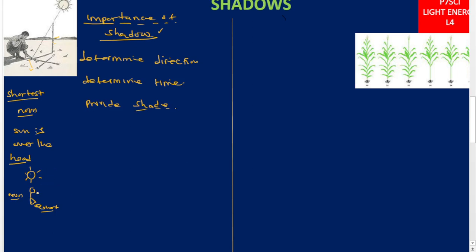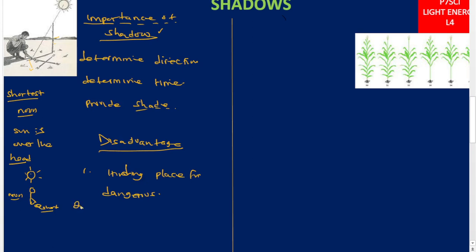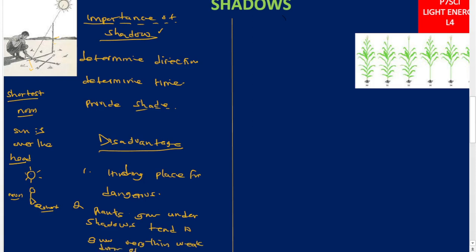However, shadows also have disadvantages. First, shadows can be hiding places for dangerous animals and dangerous people — at night they hide under the shadow and cause harm to people. Second, plants growing under shadows tend to grow very thin and weak due to competition for sunlight, which is not favorable to crop farmers.